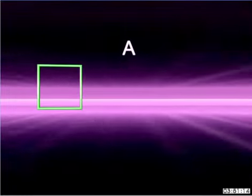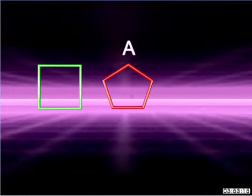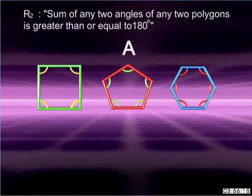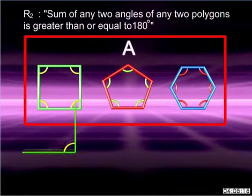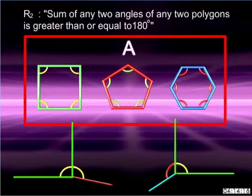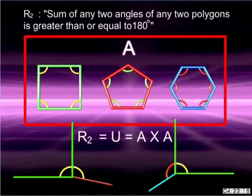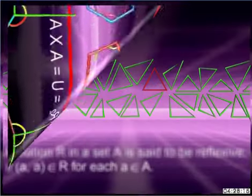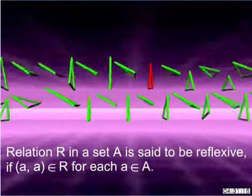Consider the same set A of regular polygons. Let R2 be the relation that stands for 'sum of any two angles of any two polygons is greater than or equal to 180 degrees.' Since any two angles of any two polygons in the given set have a sum greater than or equal to 180 degrees, each element of the set is related to every other element. Hence the relation R2 is a universal relation in set A.